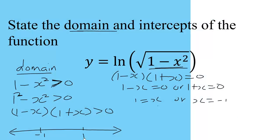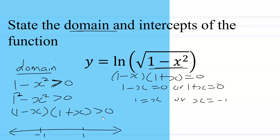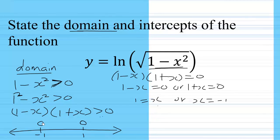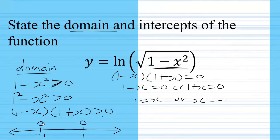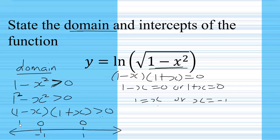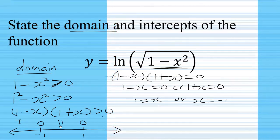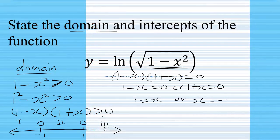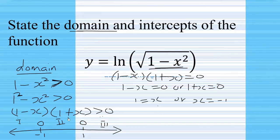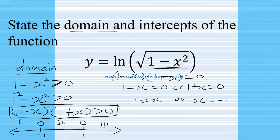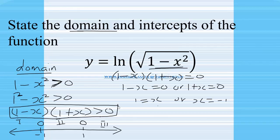Since the inequality does not include the equal-to sign, the boundary values negative 1 and 1 are not included in the solution set. We now have three regions: region 1, region 2, and region 3. We need to test which region satisfies the quadratic inequality; the region that satisfies it is the solution.